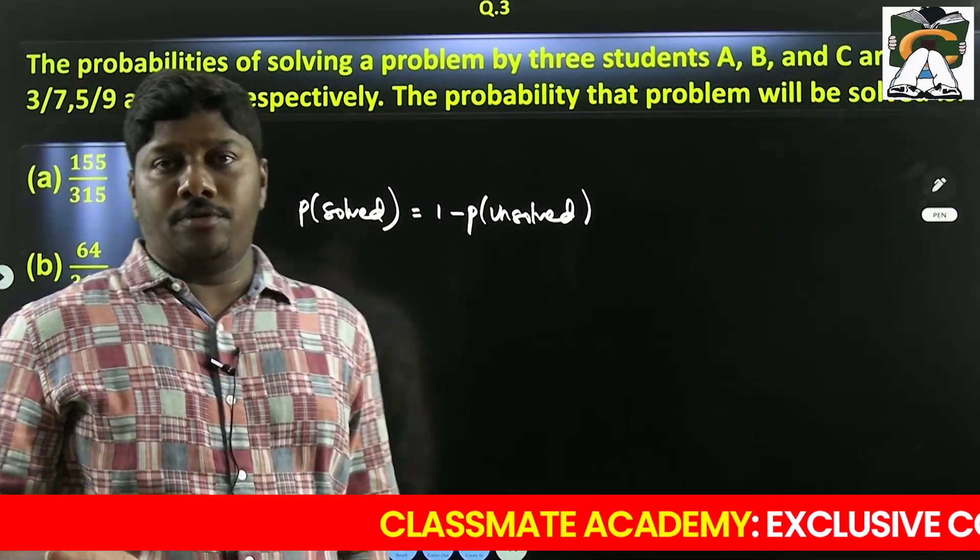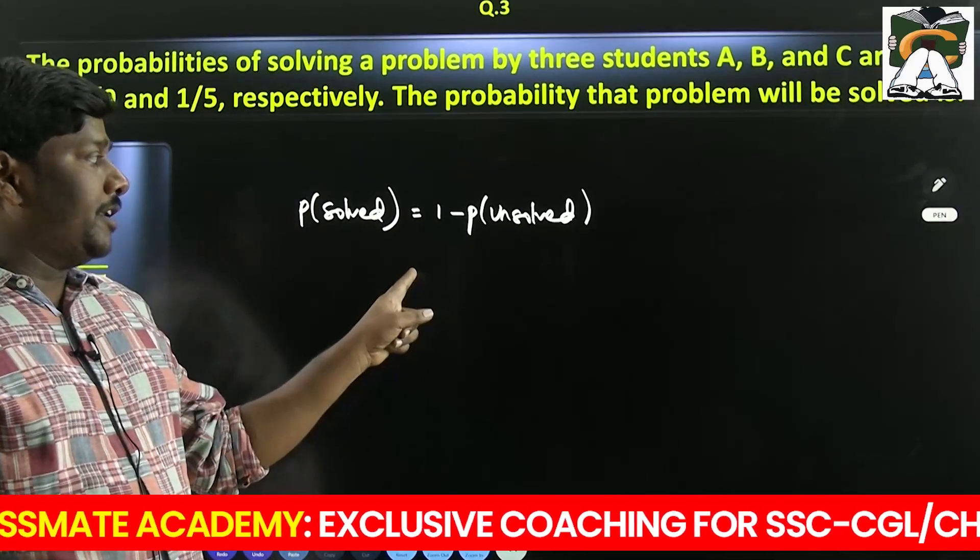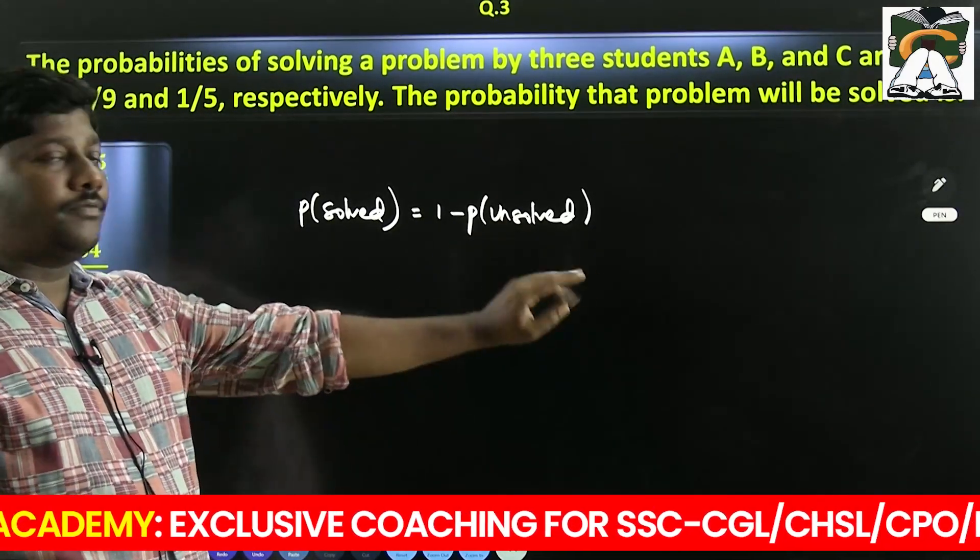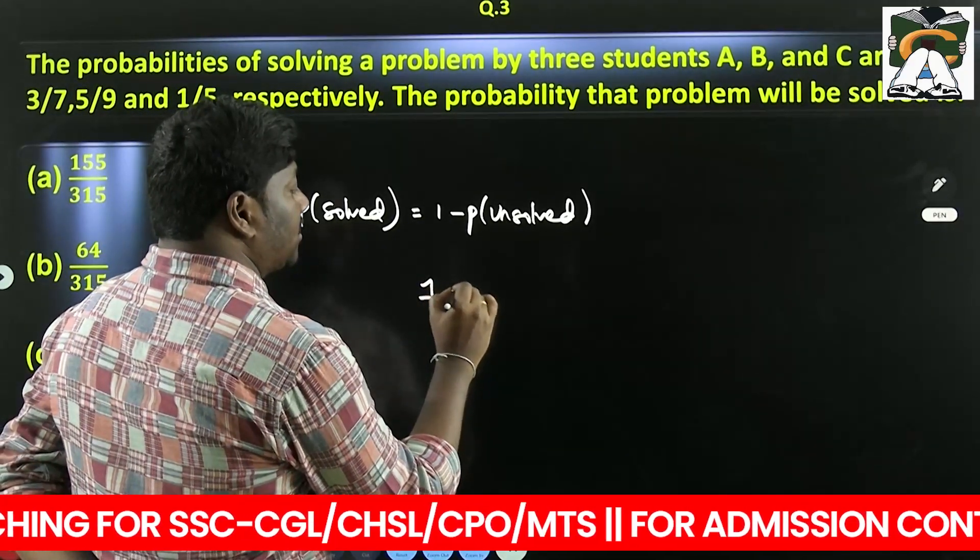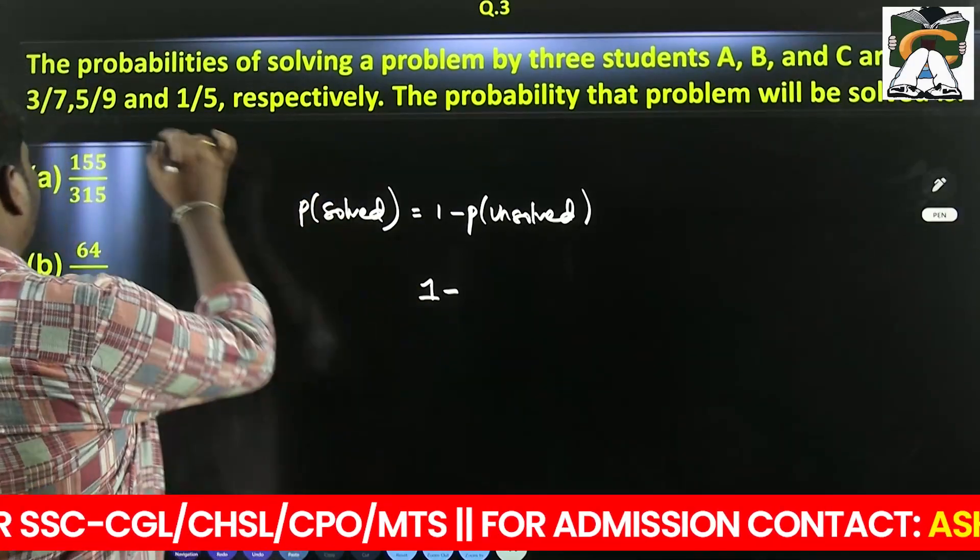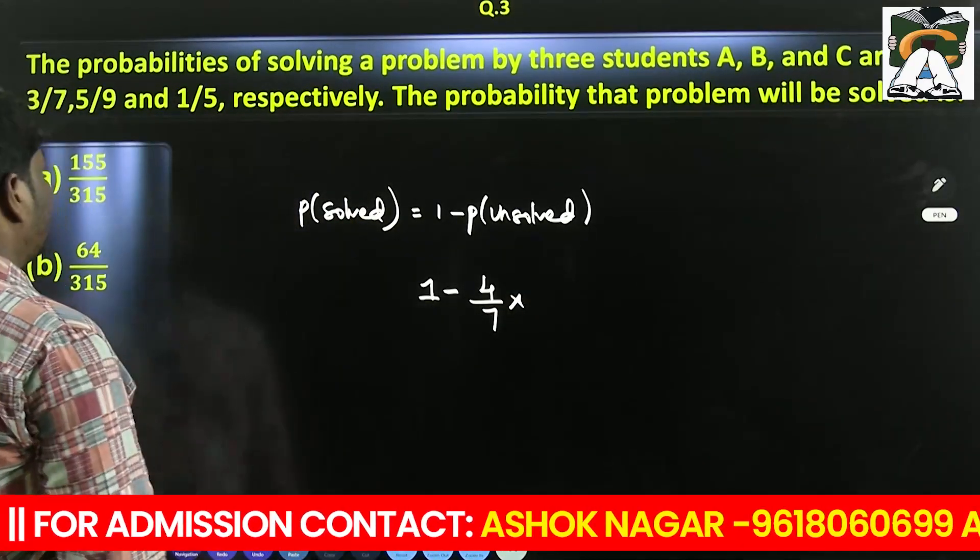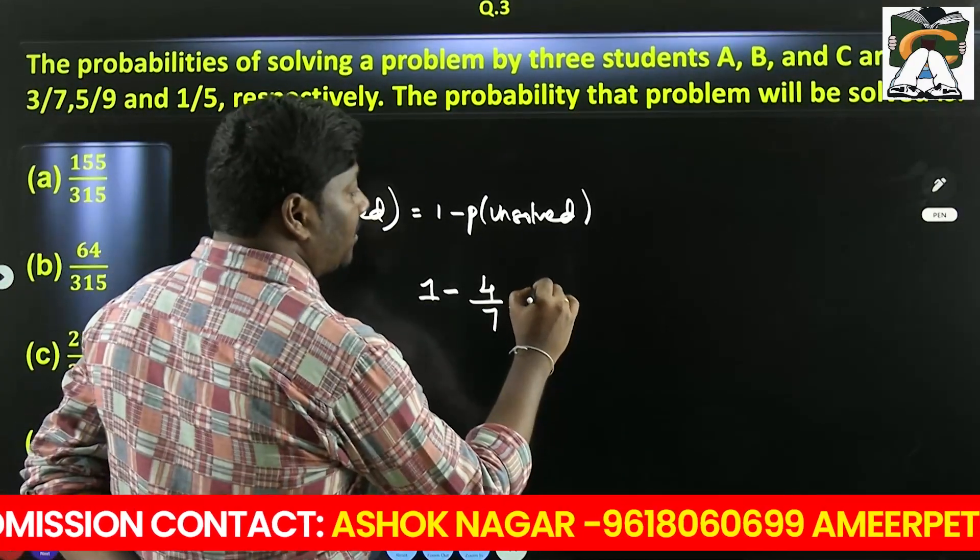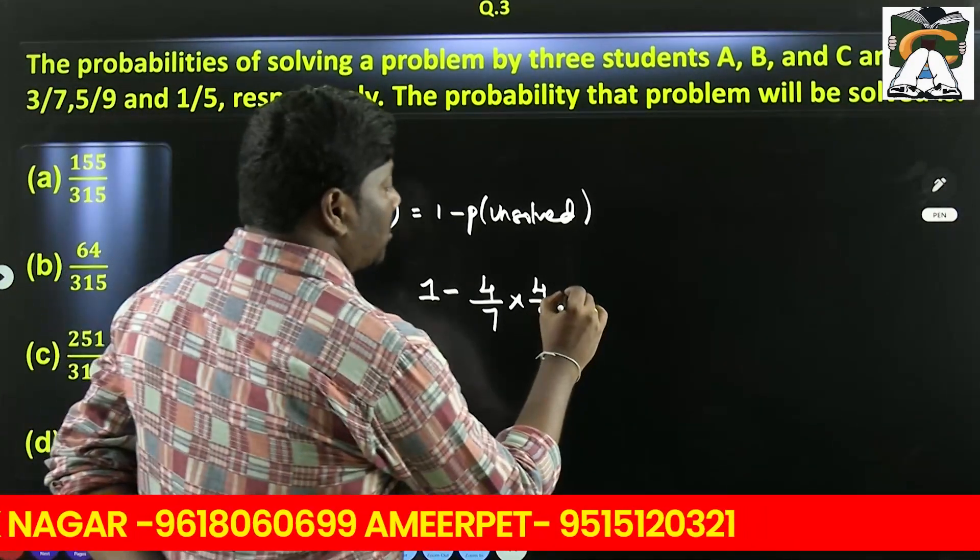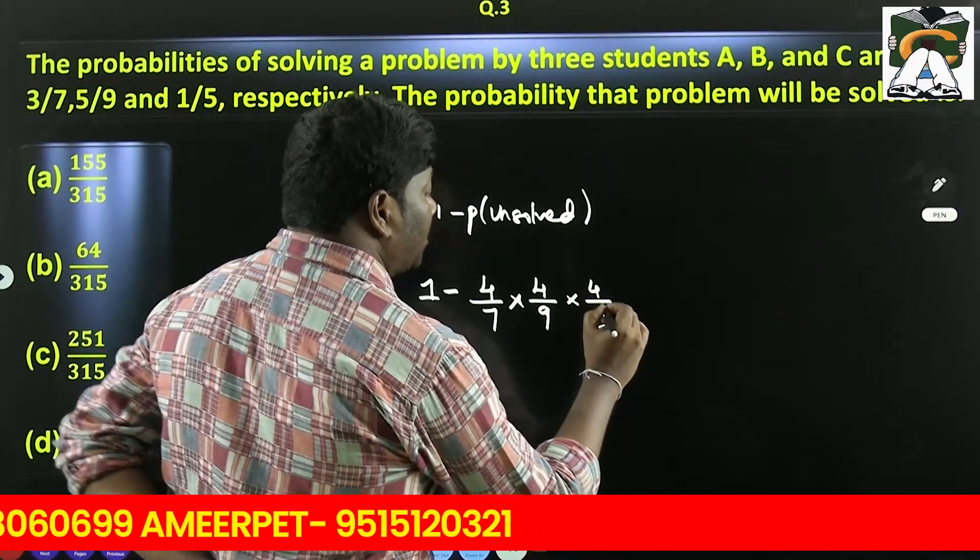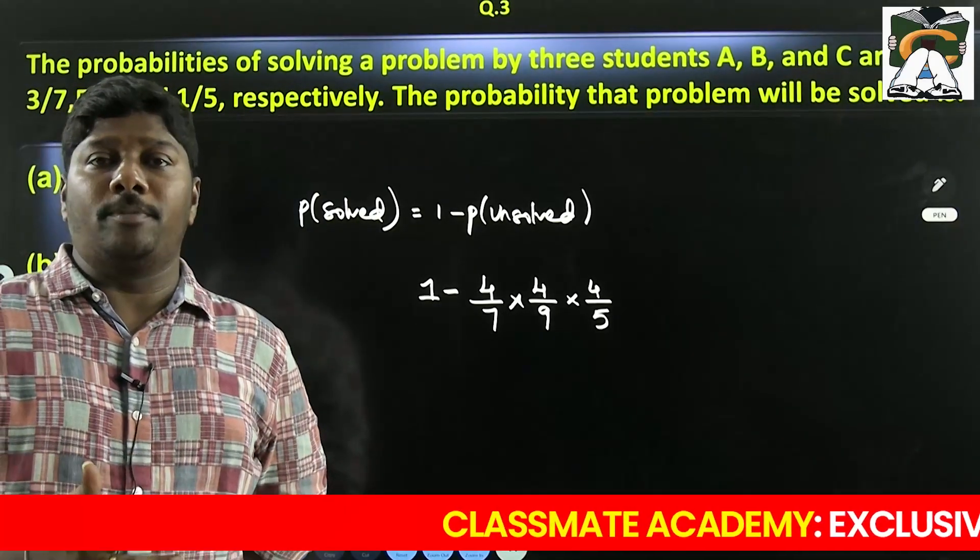None means problem will not be solved. Problem will not be solved is 1 minus. First fellow solving the problem is 3 by 7, not solving the problem is 4 by 7. Second fellow solving the problem is 5 by 9, not solving the problem is 4 by 9. Third fellow solving the problem is 1 by 5, so not solving the problem is 4 by 5. So probability of at least 1 equals 1 minus probability of none.